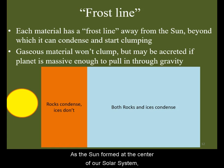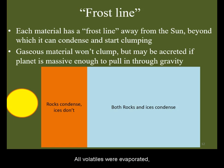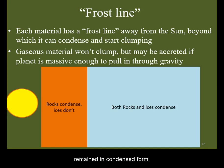As the sun formed at the center of our solar system, it heated up its central regions near it. All volatiles were evaporated, and only rocks remained in condensed form.